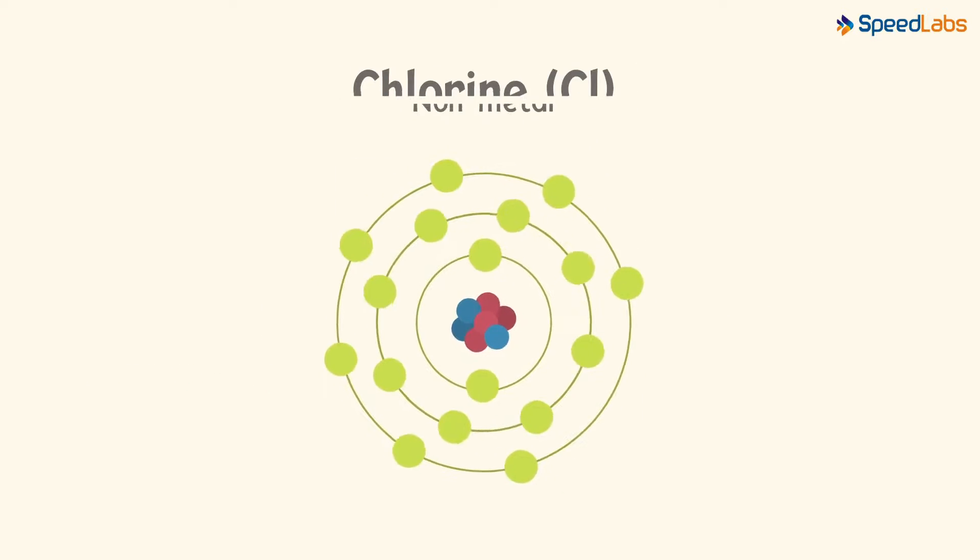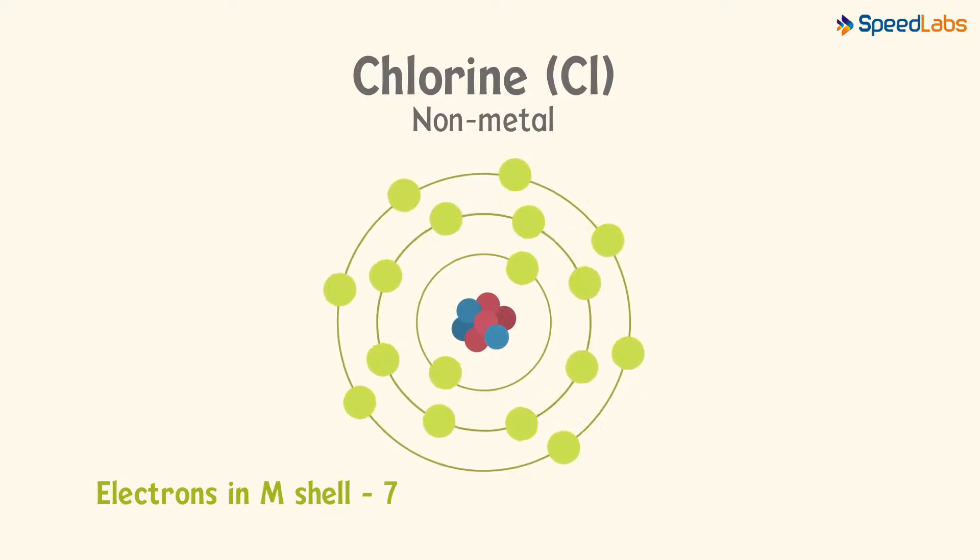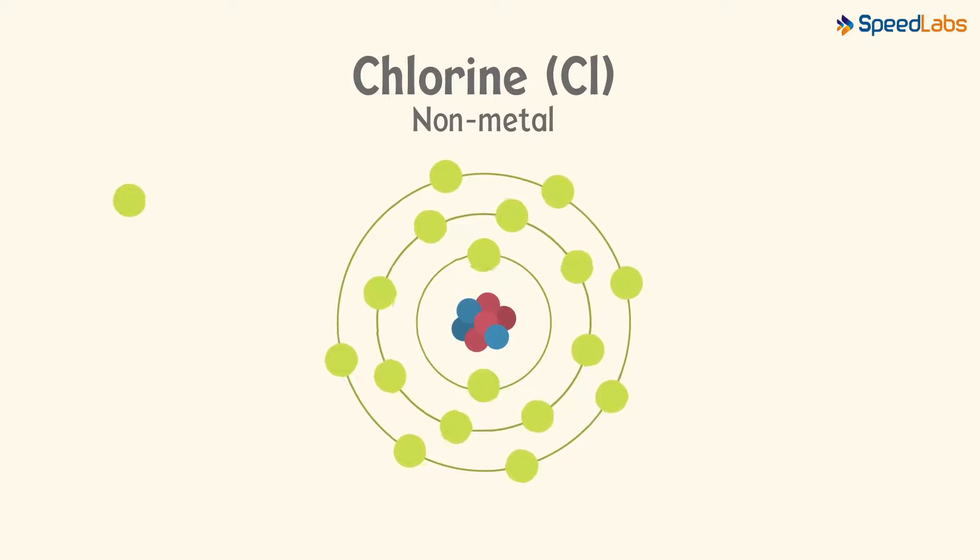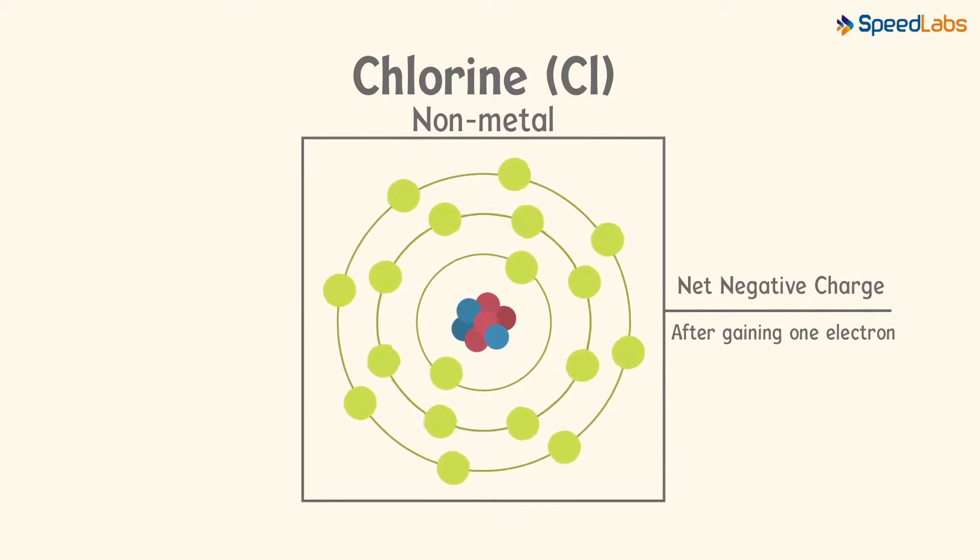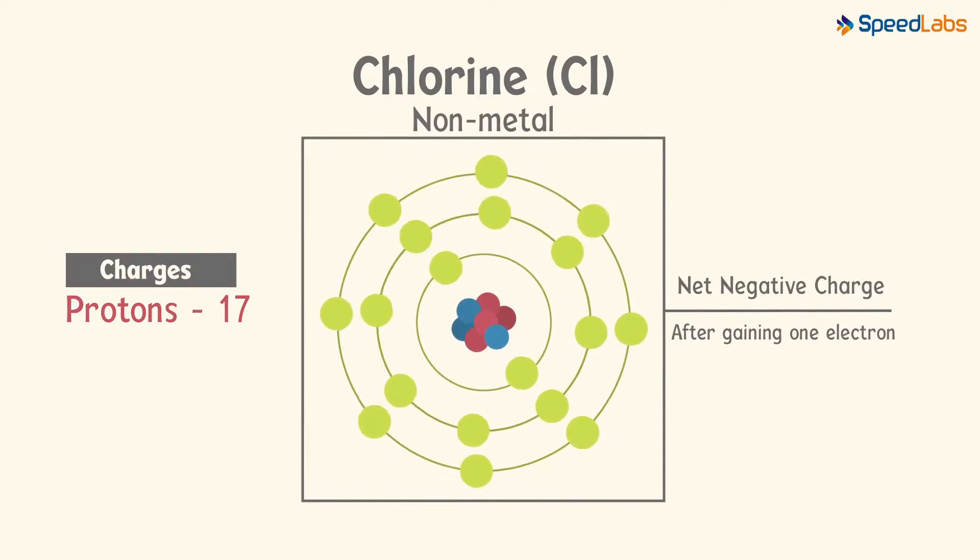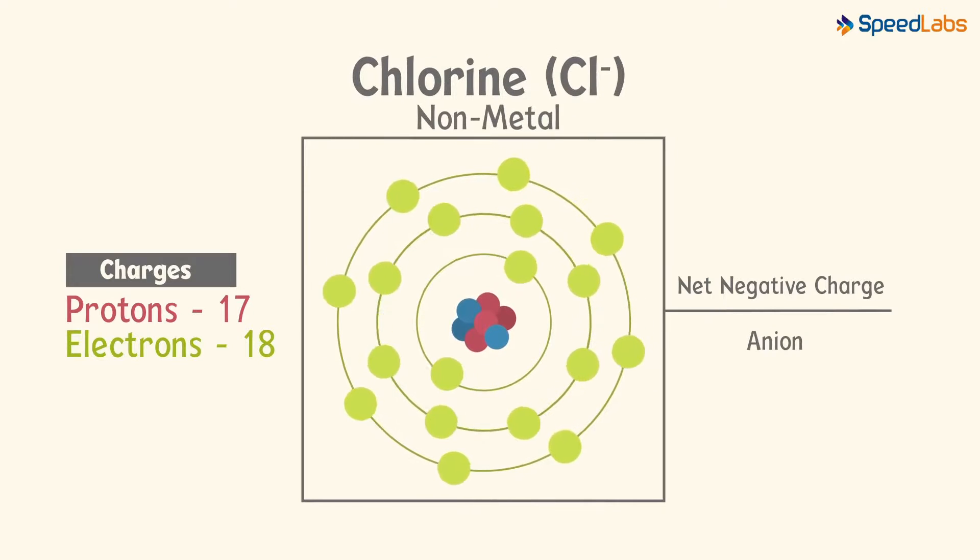Now look at chlorine which is a non-metal. It has 7 electrons in its outermost shell, and it requires just 1 electron to complete its octet. If it gains an electron, the atom will have a net negative charge as its nucleus still has 17 protons, and there will be 18 electrons in the K, L and M shells together. That will give us a chloride anion, Cl-.